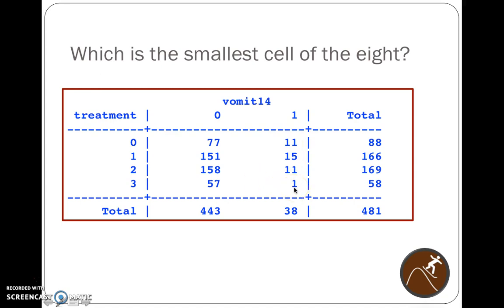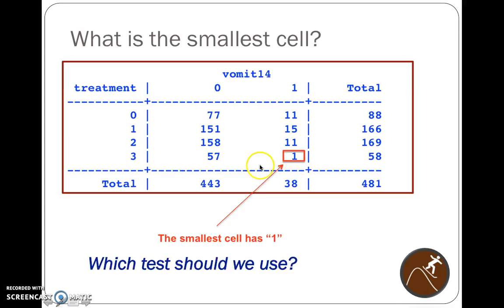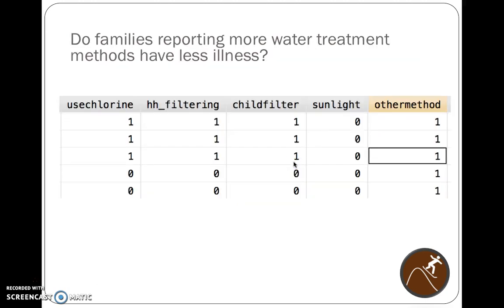So if any of our cells are less than five or equal to five, we should be thinking, how are we going to test this data? So which test should we use since this cell has a value of one? Should we use the chi-square test or Fisher's exact test? I would hope you selected Fisher's exact test, because that would be preferred over the chi-square test.